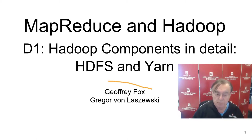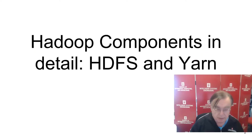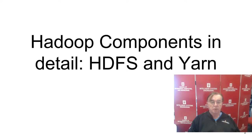Here we are. I'm Geoffrey Fox. We're on the fourth of these sub-lectures in the Hadoop and MapReduce section of the Cloud Computing class. We're going to go through things like MapReduce, Yarn, Shuffle, and so on, which are the components of Hadoop.